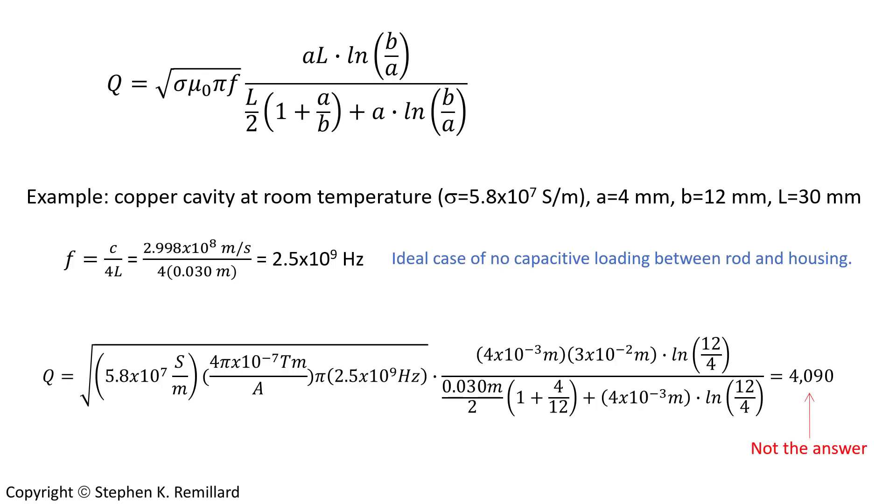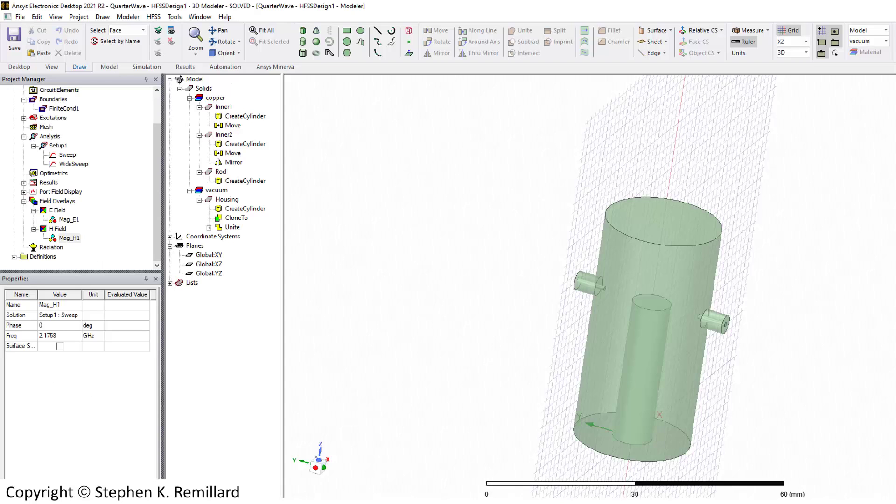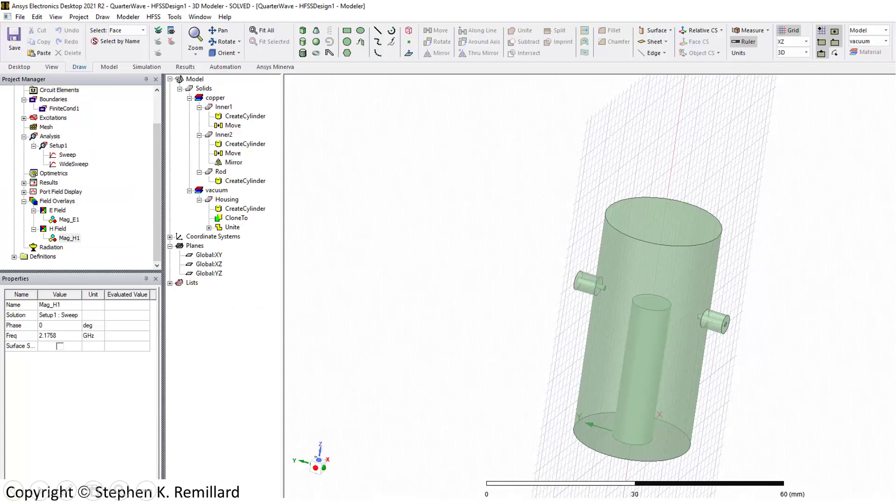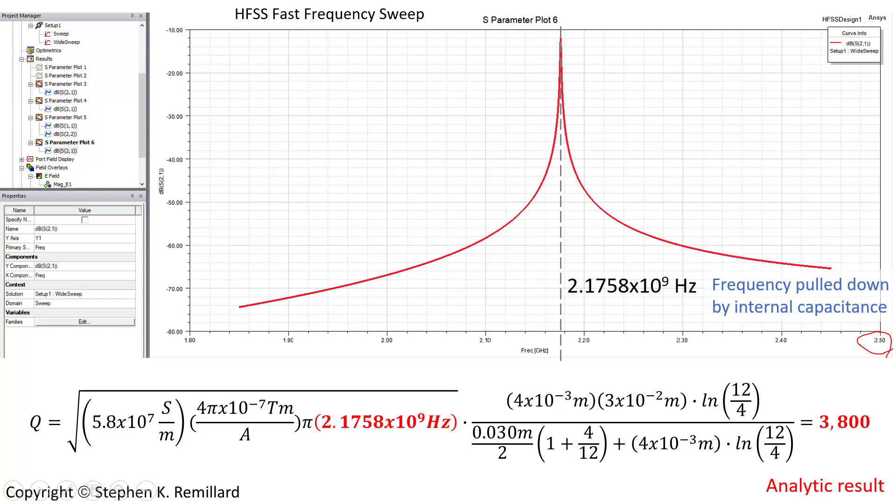But wait, we're going to build it, and we're not going to get that. Let's see what the issue is. I'll simulate the same structure in HFSS. We have the exact same geometry. I'll run the simulation and I'll find a resonant frequency of 2.1758 gigahertz. That's not 2.5 gigahertz, because of the capacitive loading between the rod and the housing, and between the rod and the end wall, the frequency gets pulled down. Go back and do that Q calculation, but now with the actual frequency that you should expect with all of the loading in the resonator. And you get 3,800. It's not a huge difference, but it's a more appropriate number to be citing. So we'll call 3,800 our analytical result.